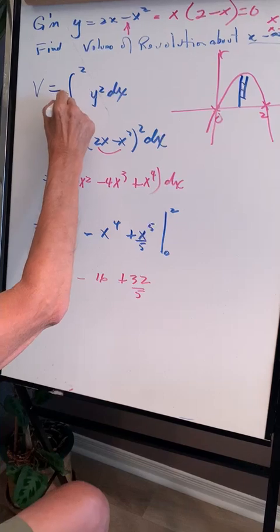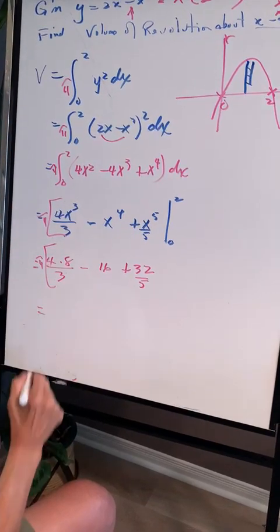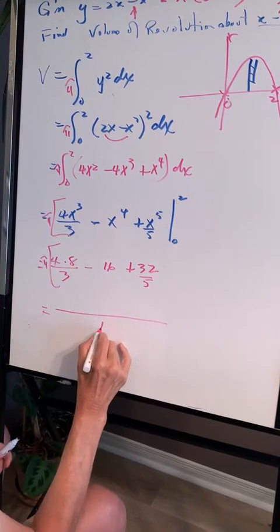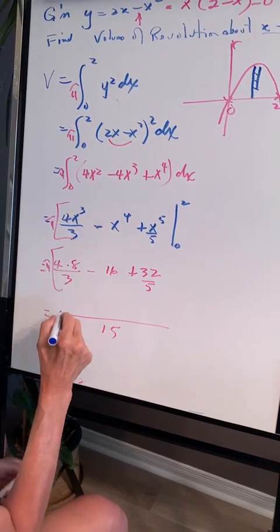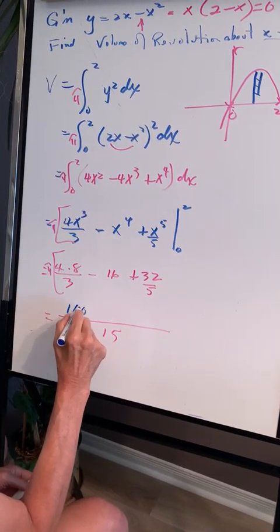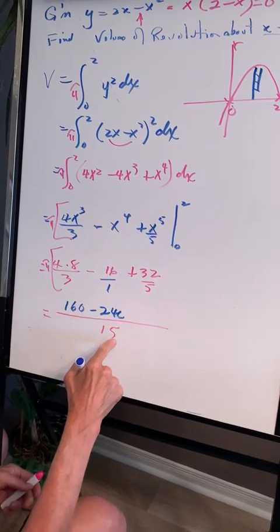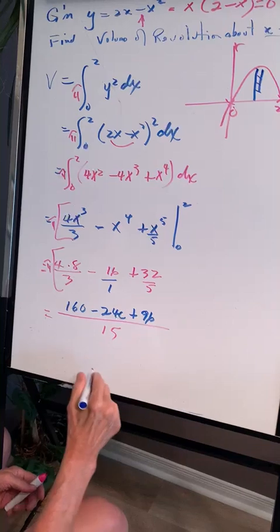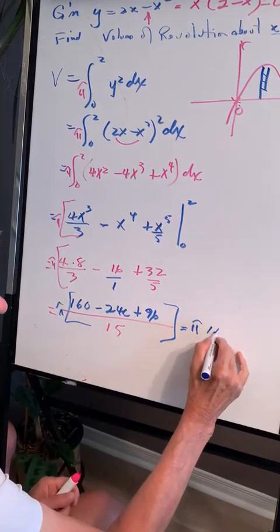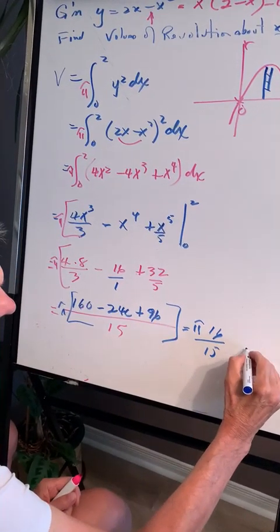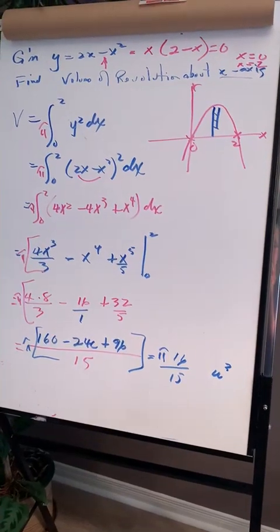We need to include pi throughout. So with pi, the common denominator of 3 and 5 is 15. 3 goes into 15 five times, and 5 times 4 is 20, working out to 160. Then 1 goes into 15 sixteen times, giving 240. And 5 goes into 15 three times, giving 96. So that becomes pi times 16 over 15, which is the volume of the parabola rotated about the x-axis in cubic units.